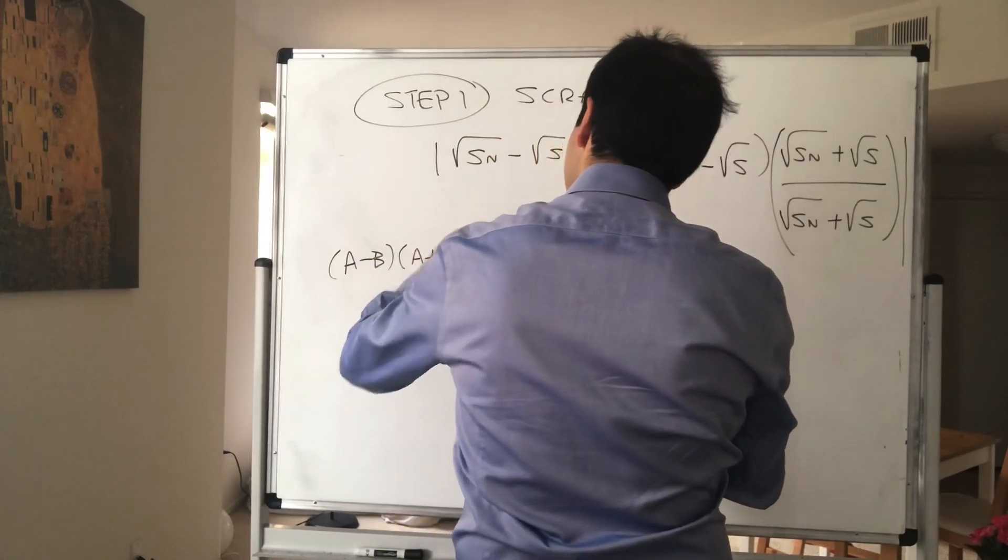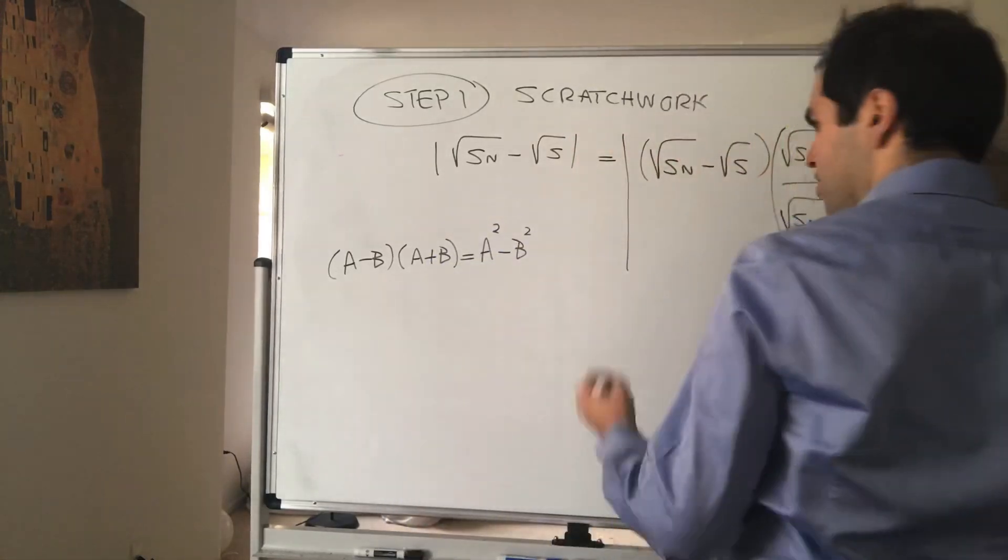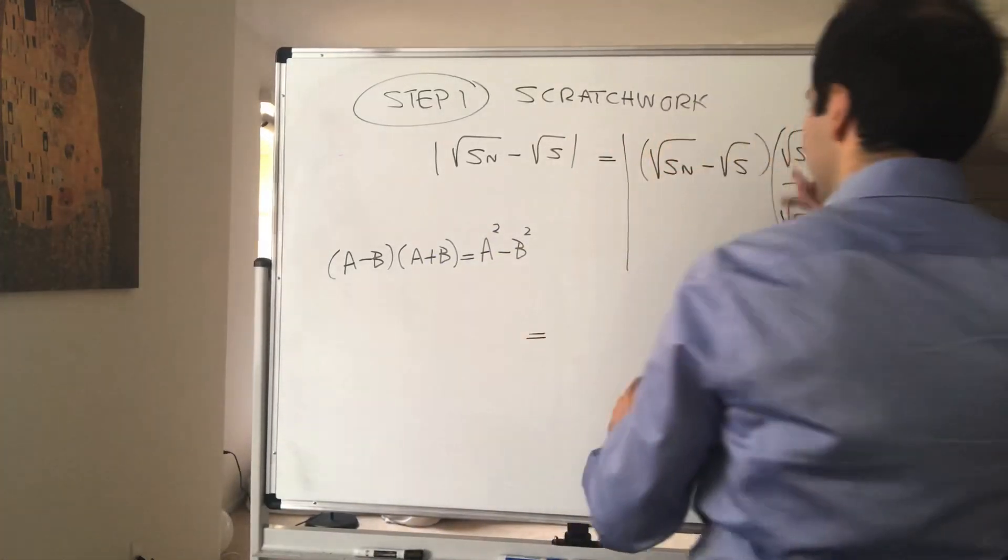The numerator is of the form a minus b times a plus b, which is a squared minus b squared.